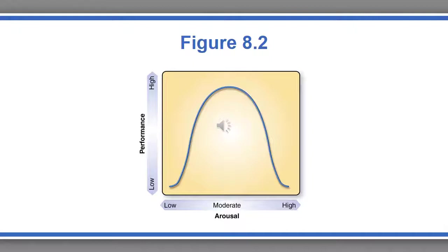With the inverted U model of arousal, there is a relationship between levels of arousal and levels of performance, with the sweet spot at a moderate level of arousal. If you're too amped up, you won't perform well; if you're not amped up enough, you also won't perform well. This is where sport and exercise psychology comes in — using precursors like meditation or visualization to get you right where you want to be when it's time to perform.